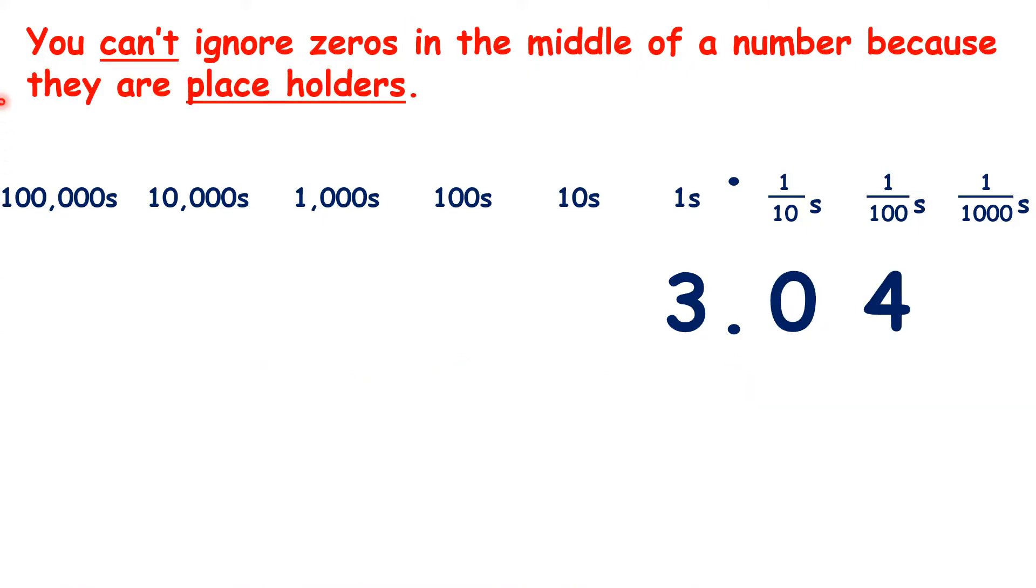But we have to be careful. You can't ignore zeros in the middle of a number, because they are placeholders. So if we have the number 3.04, we can't ignore the zero. If we did, then because the first digit after the decimal point is always the tenths digit, we would have 3.4.